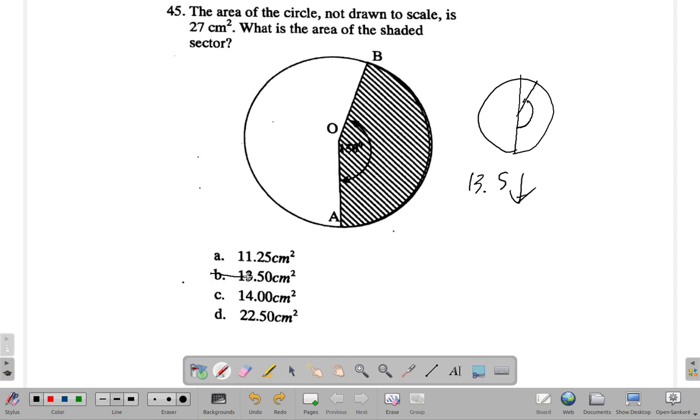It's not this. It can't be this because 14 is greater, and it can't be this because 22.5 is greater and it has to be less. This must be the answer, A.